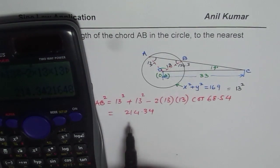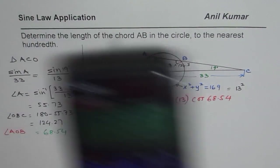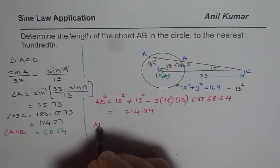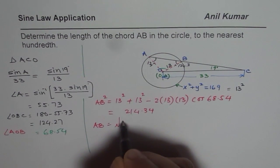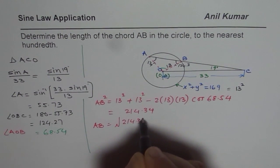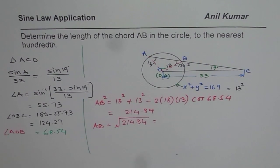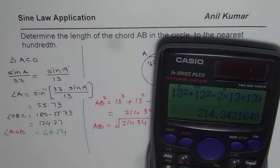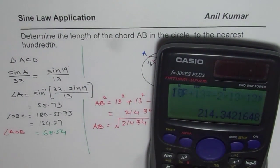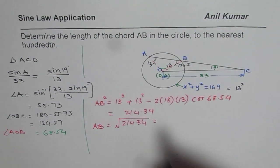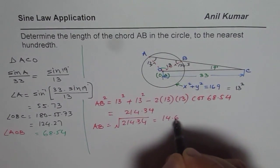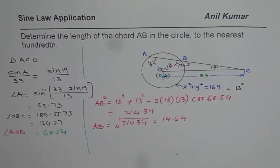So we get 214.34 and we will take the square root of this to find AB. So AB is equals to square root of 214.34 which is equals to, so AB is square root of the answer and that is equal to 14.64. So we get 14.64 as the length of AB.